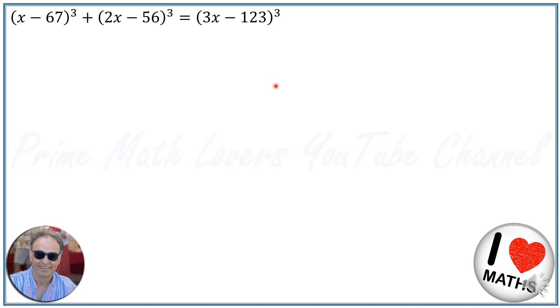First of all, we consider having two new variables. Name m is equal to x minus 67, this part, and n is equal to 2x minus 56, this part. And for beginning, we try to calculate m plus n.